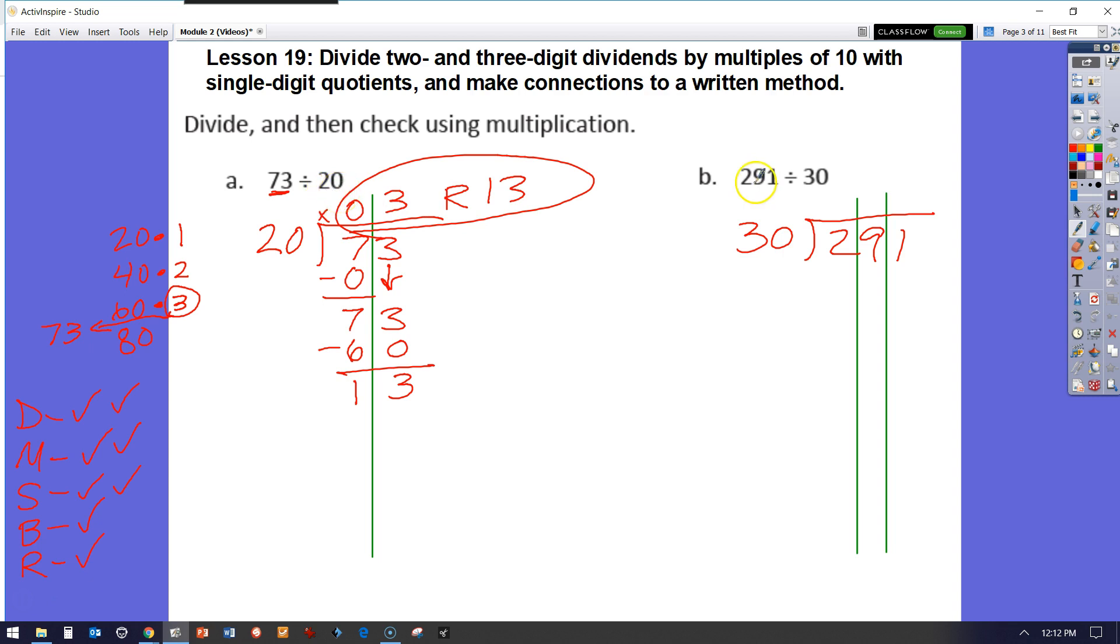All right. Let's take a look at B. You have 291 divided by 30. Remember when we're doing our standard algorithm, the first number goes underneath. The second number goes outside. So my dividend goes underneath the division side. My divisor goes outside and I always think of it as a race. If my dividend was first place, he's going to get in the house first.